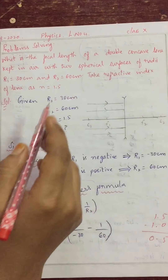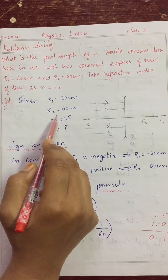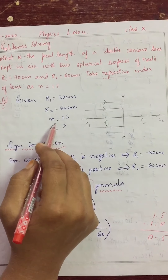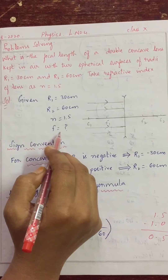Here he has given the R1 and R2 values and the n value. We need to find f. The question asks: what is the focal length of a double concave lens kept in air with two spherical surfaces of radii R1 = 30 cm and R2 = 60 cm, and refractive index n = 1.5?